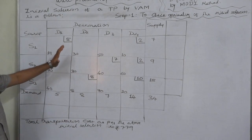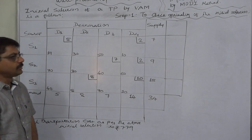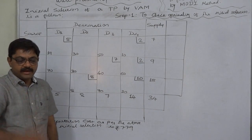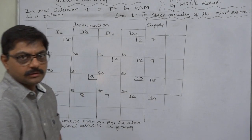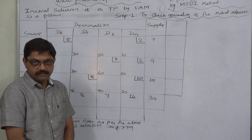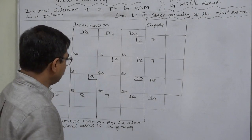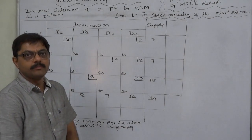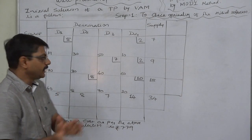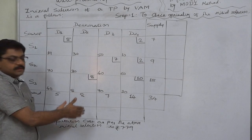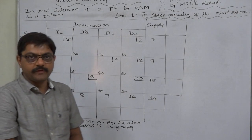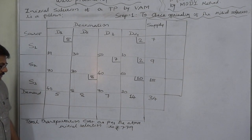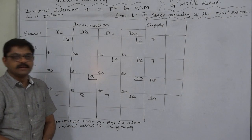We have an initial solution of a transportation problem obtained through Vogel's Approximation Method. I advise you all to first watch our transportation problem video lecture number 7, because in that lecture we discussed how to obtain the initial solution of a transportation problem by VAM. In that lecture we already obtained this initial solution, and the total transportation cost as per the initial solution is Rs. 779.